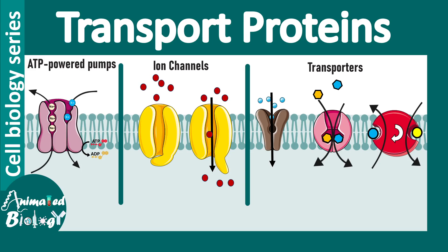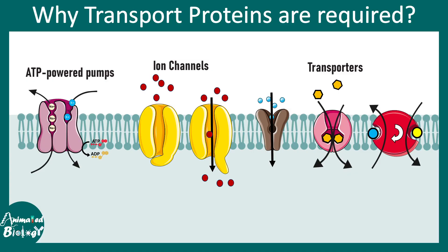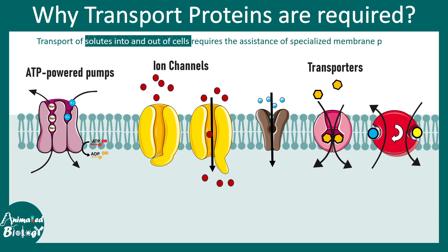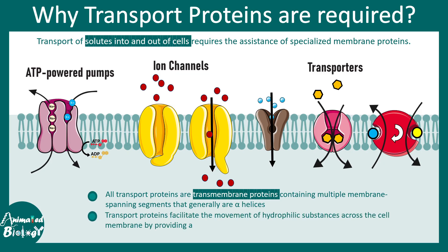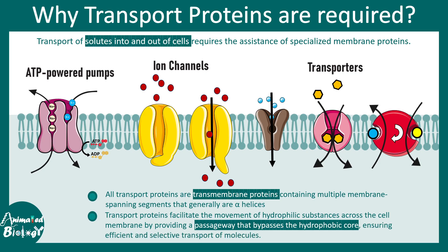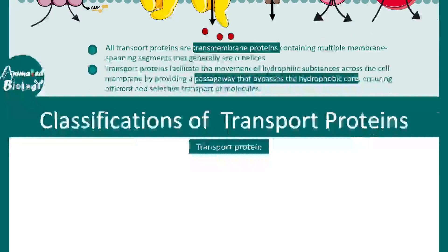In this lecture we'll talk about transport proteins. Transport proteins help in the transport of solutes across the membrane. These are transmembrane proteins containing multiple membrane spanning segments, which are generally alpha helices. Transport proteins facilitate the movement of hydrophilic molecules through the hydrophobic plasma membrane. A hydrophilic molecule cannot pass through the plasma membrane because the internal part is hydrophobic, so transport proteins create a tunnel or passageway to bypass that hydrophobic core.